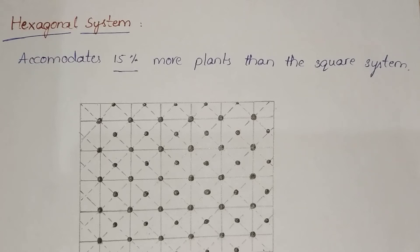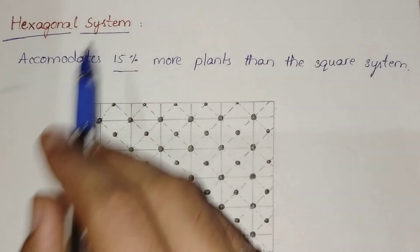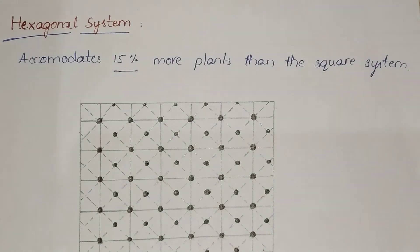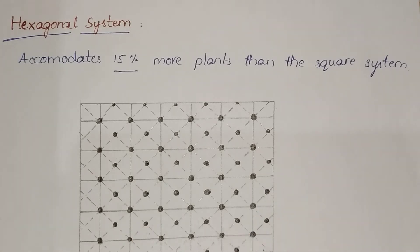In this class we are going to discuss about the hexagonal system. Cultivation of land between the tree rows is possible in three directions with this system. This system is generally followed where the land is costly and very fertile, with ample provisions of irrigation water.